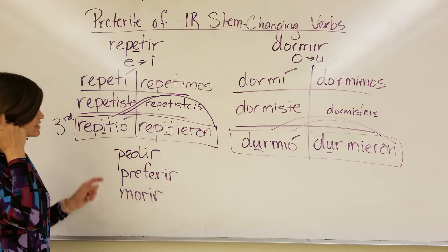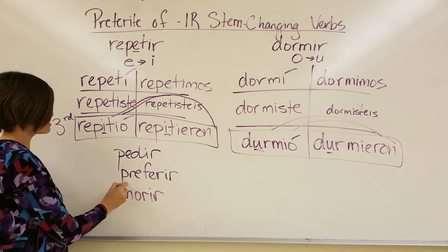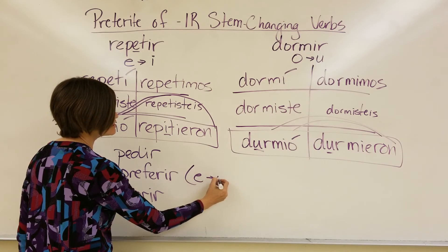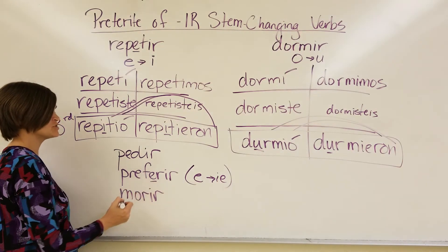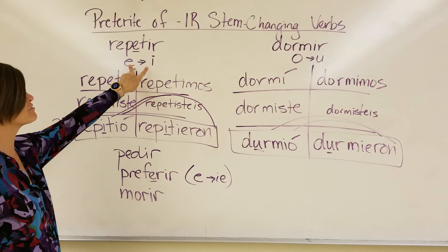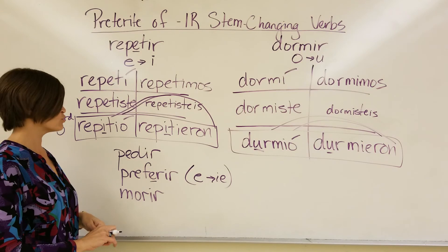I would like you to take one of these, okay, maybe this one right here, preferir, because that is an example where, in the present tense, it changes from an E to an IE. But in the preterite tense, this E is going to change just to an I, because that's the change that you always have in the preterite of an IR verb. E will change to I, O will change to U.